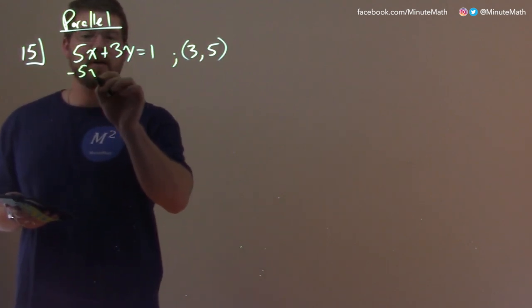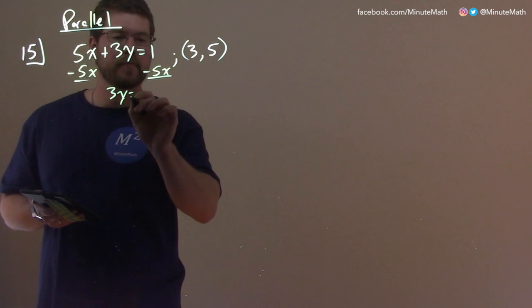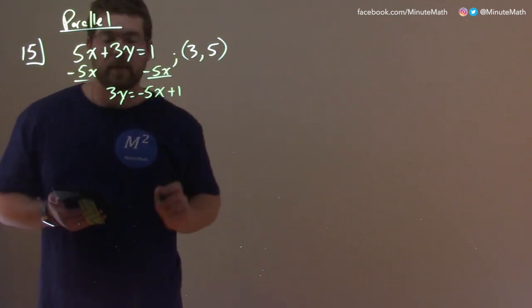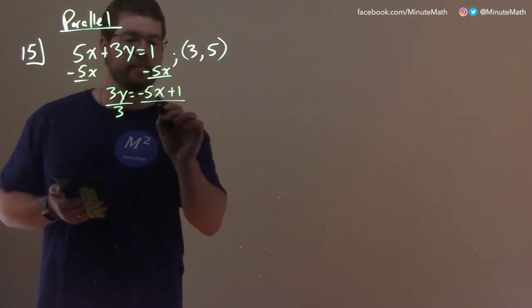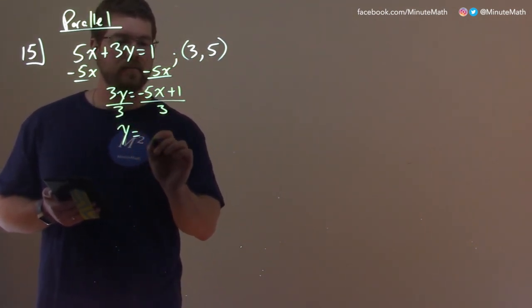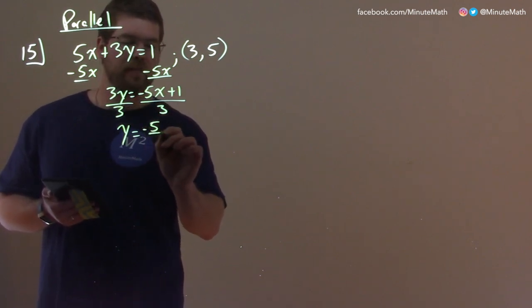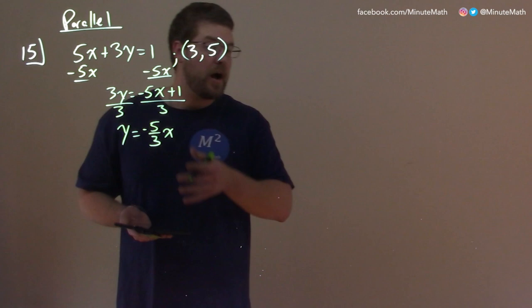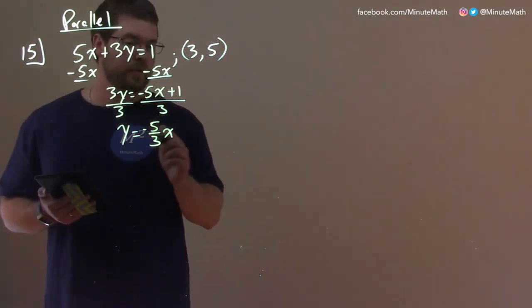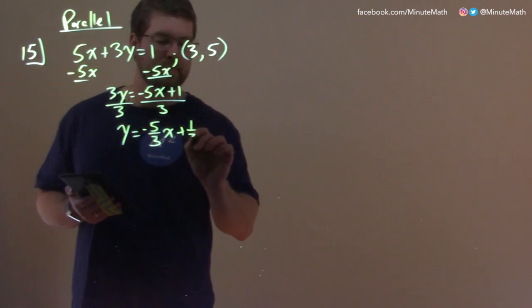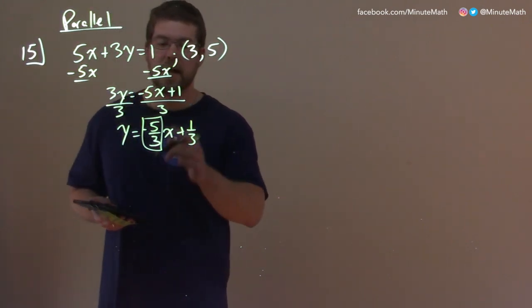Subtract the 5x to both sides, and I'm left with 3y equals a minus 5x plus 1. Then from there, I can divide both sides by 3, and I'm left with y by itself, and we have negative 5x divided by 3, negative 5 thirds x. And to be honest, I don't even have to finish this if I don't want to. All I care about is that slope, but I'm going to plus 1 third. But what I'm looking for here is that slope, negative 5 thirds.